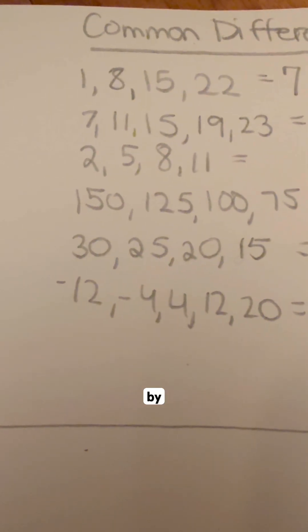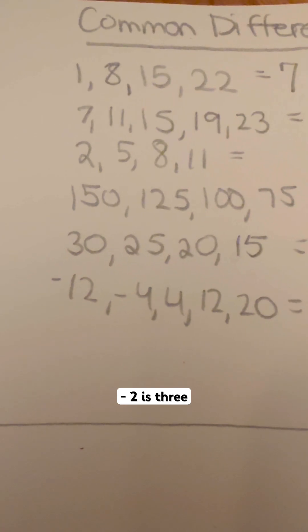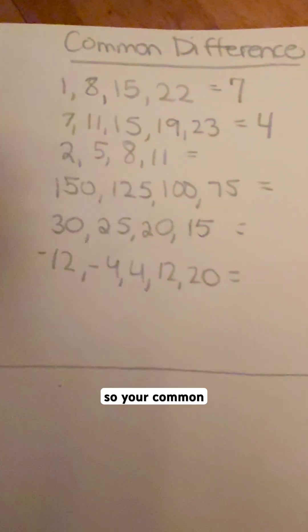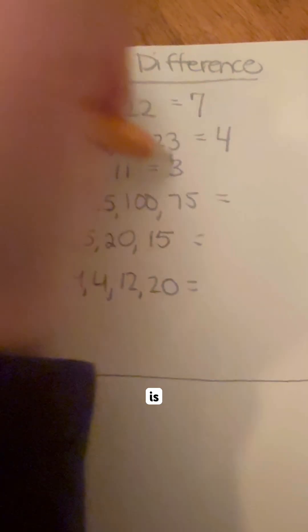Next one is going up by 3, because 5 minus 2 is 3. And then we add 3 again, you get 8, add 3 again, you get 11. So your common difference on this one is 3.